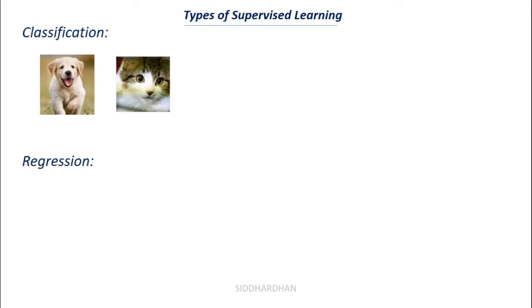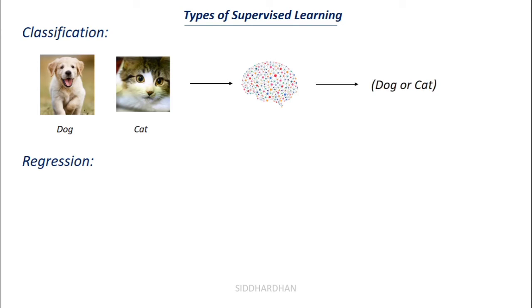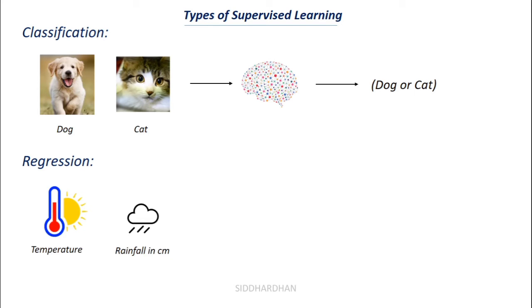For classification: we want our model to see an image and recognize whether it is a dog or a cat. We give the labeled images to the model, it maps them to the labels, and then it can tell whether a new image is a dog or cat. This is classification because we are classifying the image into one of two categories — there are no middle or decimal values, it is binary in this case.